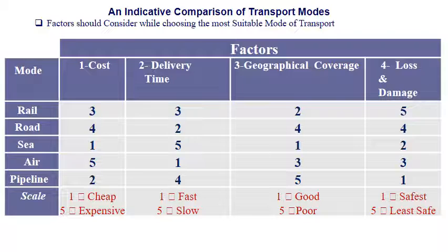The comparison table of transport modes uses the following modes: rail, road, sea, air, and pipelines. The factors used to compare them are: cost, delivery time, geographical coverage, and loss and damage.